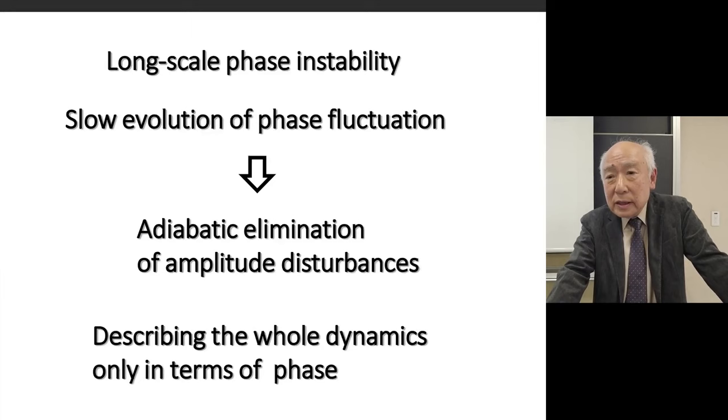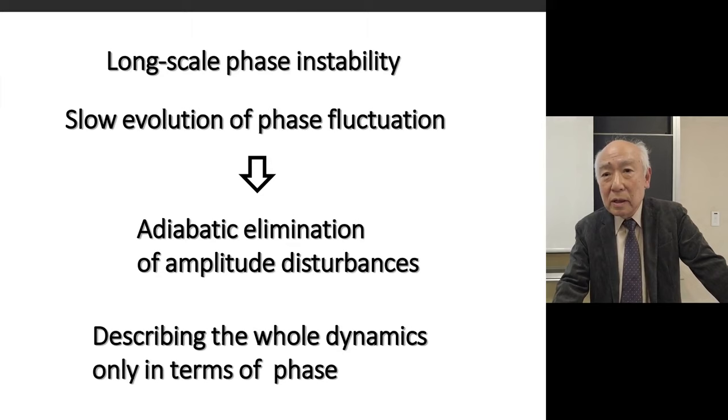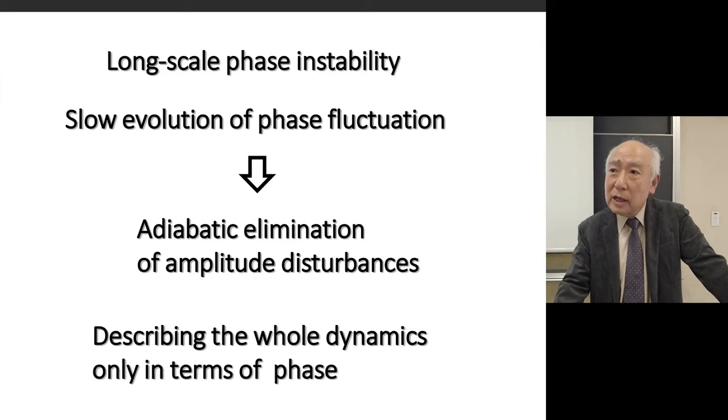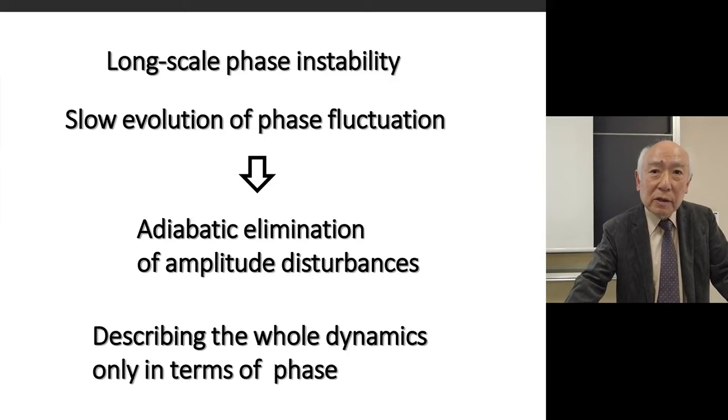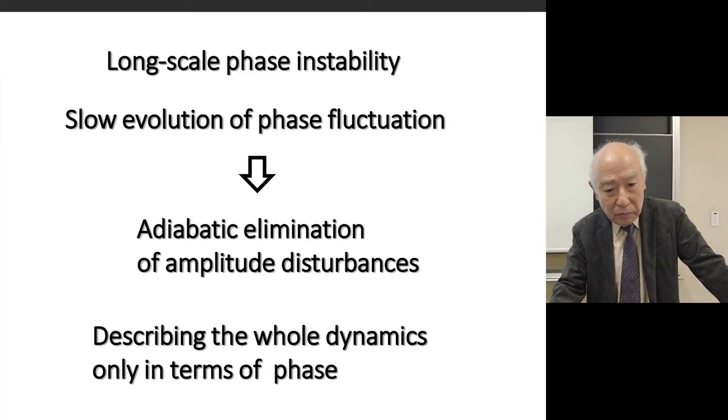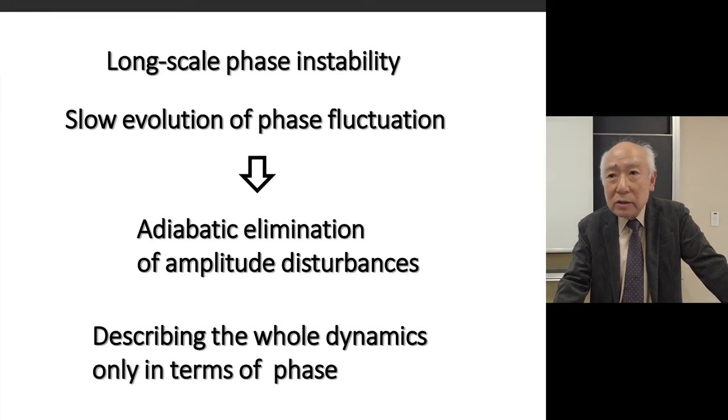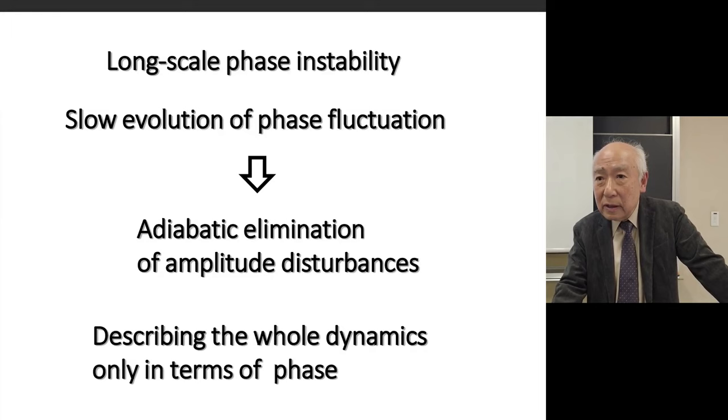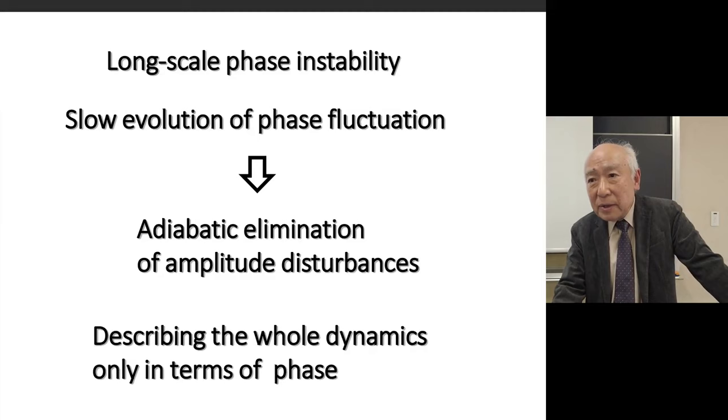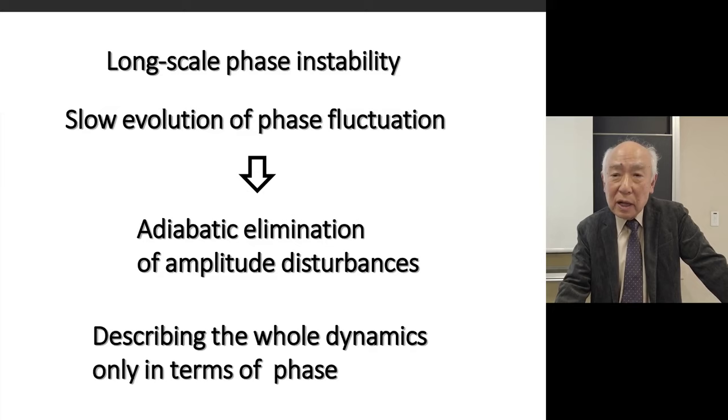To study this, the first thing to be noticed was that this instability, occurring through a uniformly oscillating field, is a long-scale phase instability. That is, the instability starts with the unstable growth of phase fluctuations with very long-scale wavelengths. So it was expected that after the termination of the unstable growth, these long-scale phase fluctuations evolve in time very slowly. This naturally led to the idea that rapidly decaying amplitude disturbances could safely be eliminated adiabatically, and the whole dynamics could be described only in terms of phase.